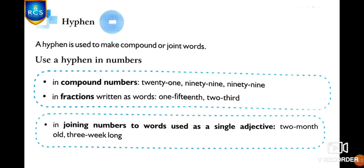Next, the hyphen. A hyphen is used to make compound or joined words. Use a hyphen in numbers — in compound numbers such as 21, 99, 92 — and in fractions written as words such as one-fifteenth, two-thirds, one-third. Also use a hyphen when joining numbers to words used as a single adjective, such as two-month-old or three-week-long.